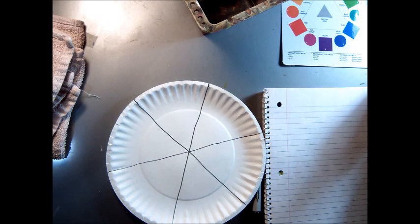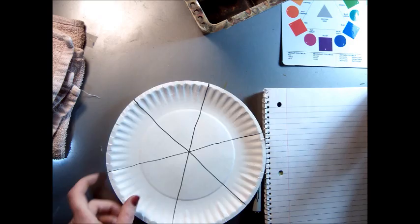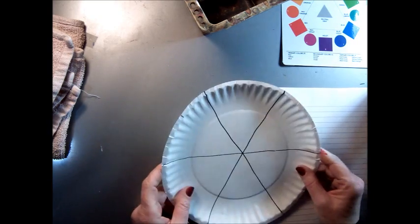Hi boys and girls. Today we're going to paint a color wheel. This is just a six-stage color wheel and we're going to do it on a paper plate.